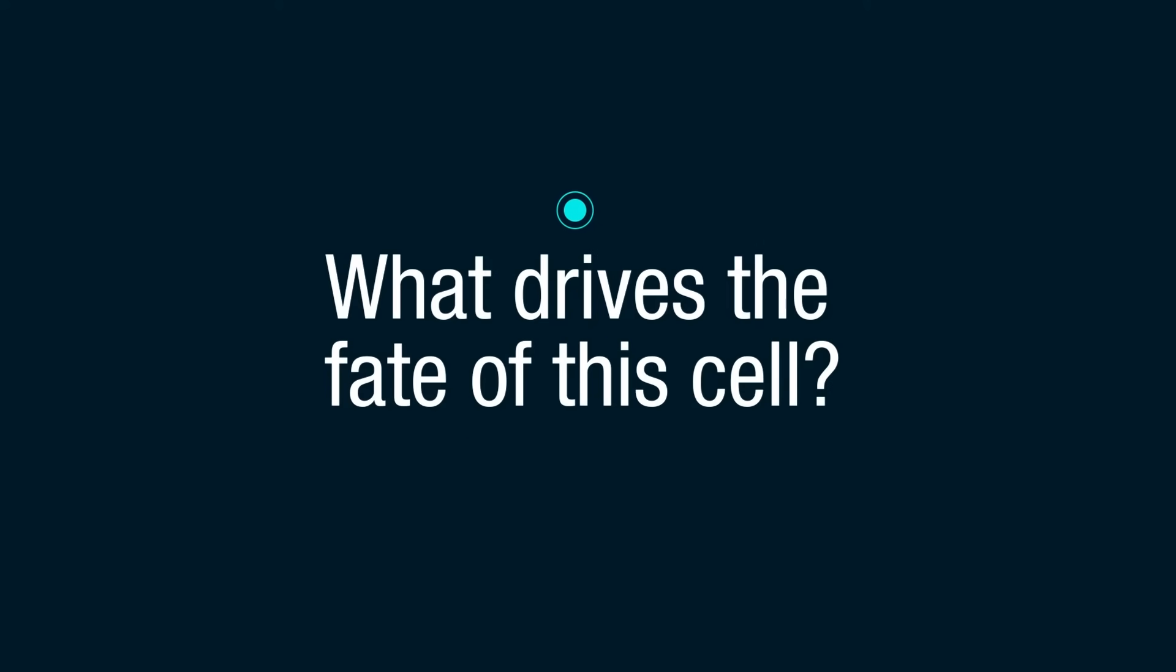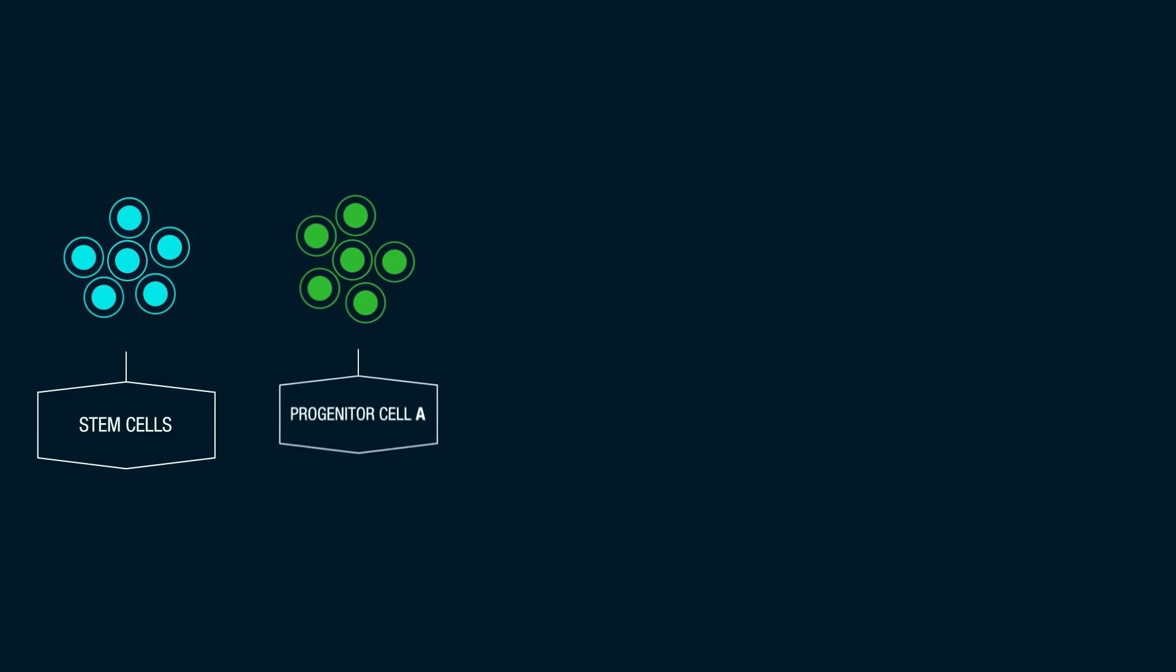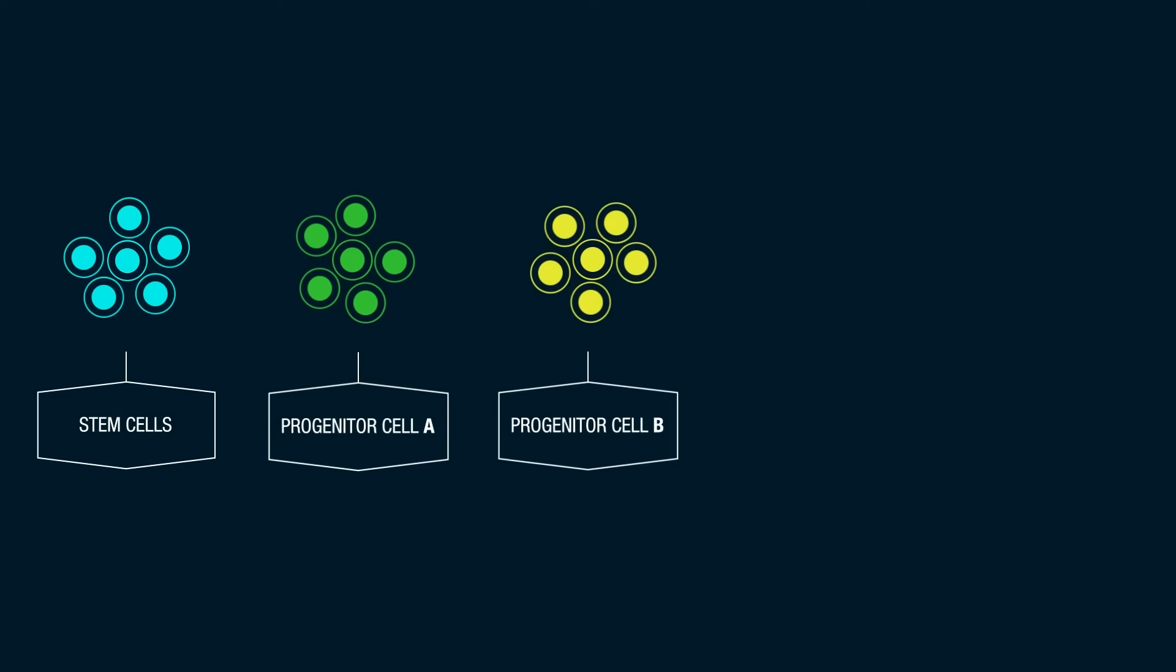What drives the fate of this cell? How do stem cells differentiate into other cells, such as blood cells?